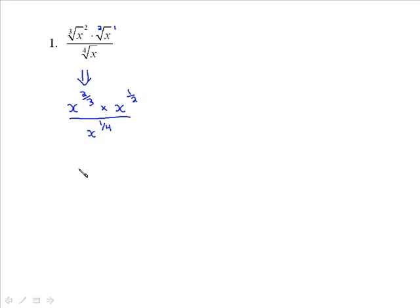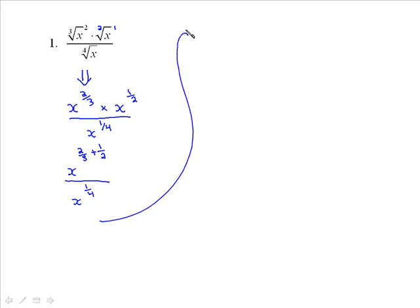Here we just do what we always do: when we're multiplying powers with the same base, we add the exponents. It's a little awkward because you've got fractions, but so we have 2 thirds plus 1 half, all over x to the 1 quarter. Get a common denominator of 6: 2 thirds times 2 becomes 4 over 6, plus 1 half times 3 is 3 over 6. That's all over x to the 1 quarter. So this becomes x to the 7 over 6, divided by x to the 1 quarter.